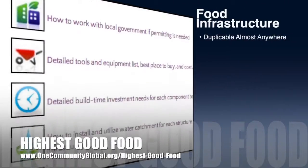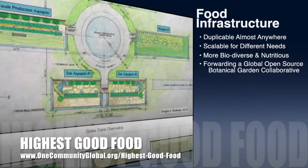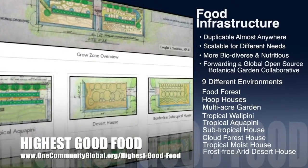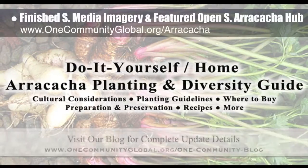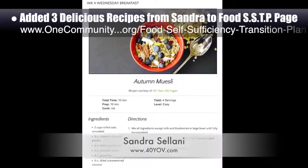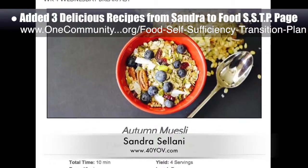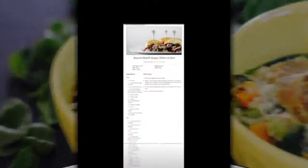One Community's approach to Highest Good Food is duplicable almost anywhere, scalable for different needs, more biodiverse and nutritious, part of forwarding a global open source botanical garden collaborative, and includes nine different free shared and duplicable growing environments. This week, the core team finished the final social media imagery and featured our open source Arakachah hub. We also added three additional recipes from Sandra Salani, vegan chef and author of 'What's Your BQ,' to the food self-sufficiency transition plan. These recipes are autumn muesli, Italian wedding soup, and sloppy sliders and slaw.